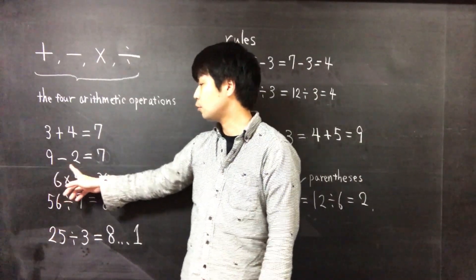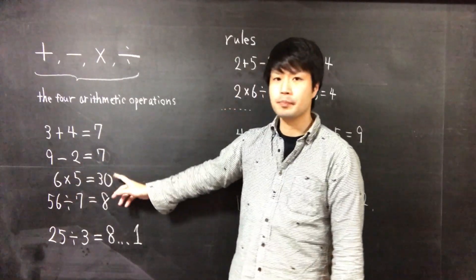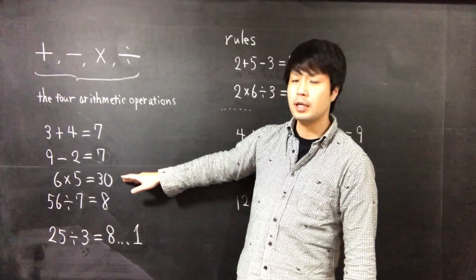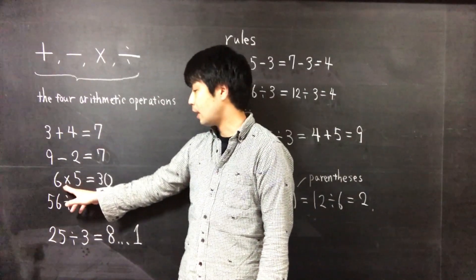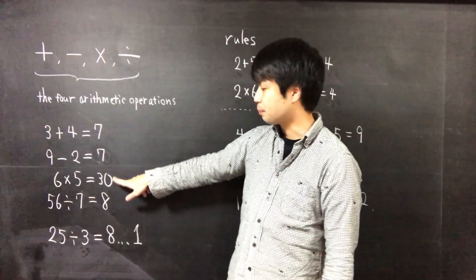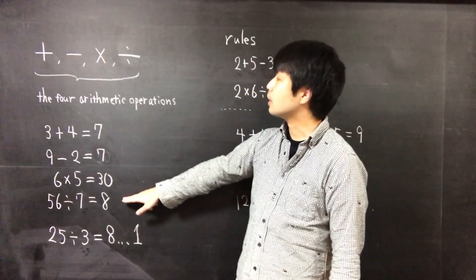3 plus 4 equals 7 is a kind of addition. Subtraction is like 9 minus 2 equal to 7.